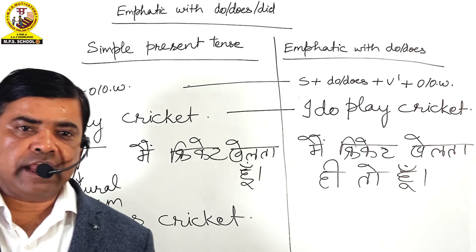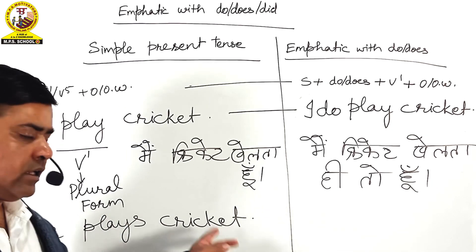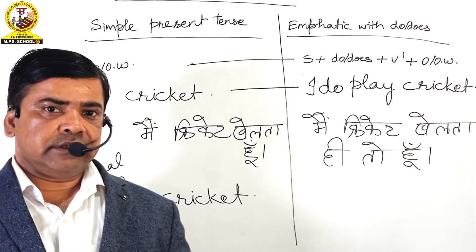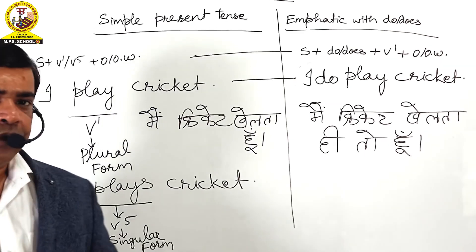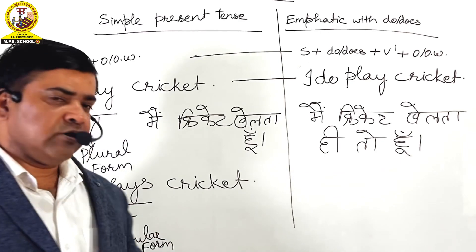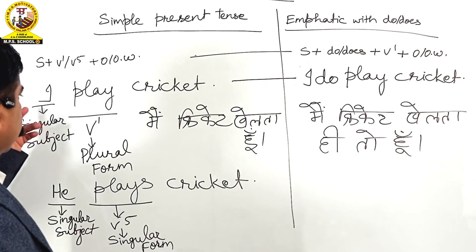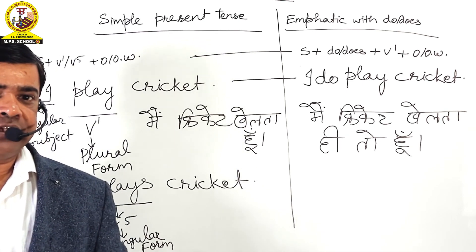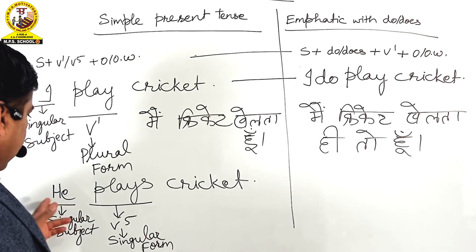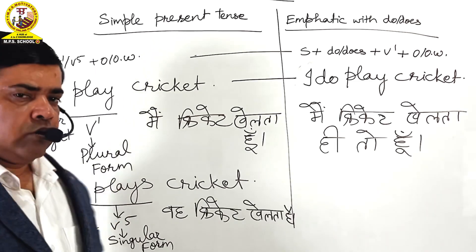Let me take another sentence: He plays cricket. It means woh cricket khelta hai. Here plays is the fifth form (V5) of the verb to play, and plays is the singular form. We often mistakenly say plays is a plural form, but plays is not a plural form — plays is a singular form. In the first example, I is a singular subject but a plural verb was used with it; here, he is also a singular subject and with he, a singular form verb — plays — has been used.